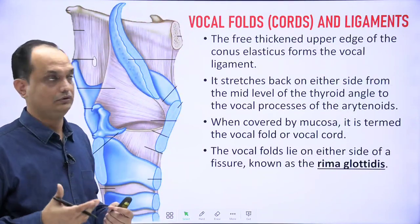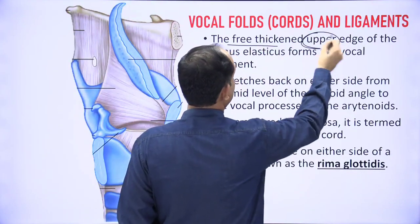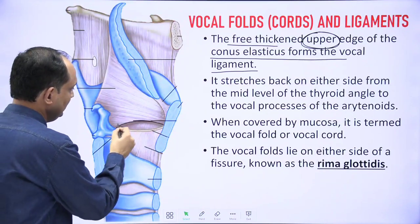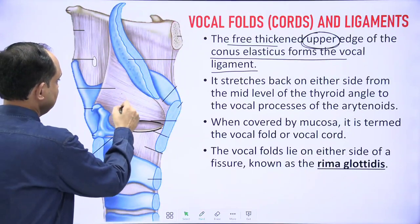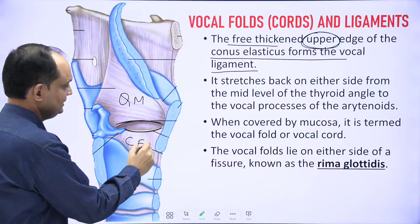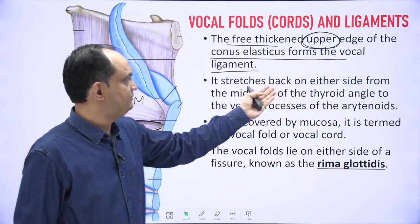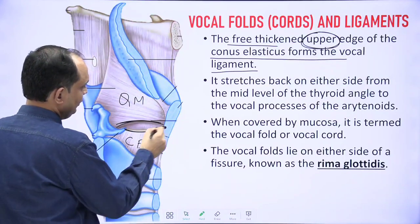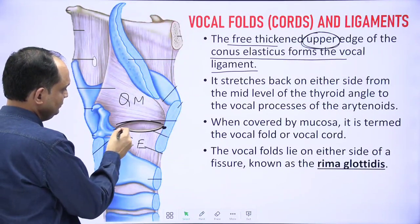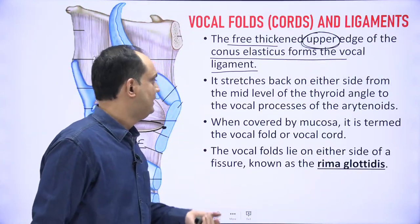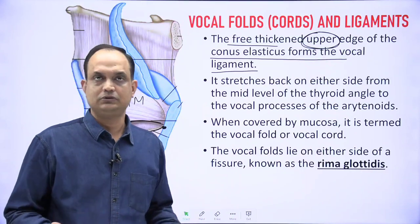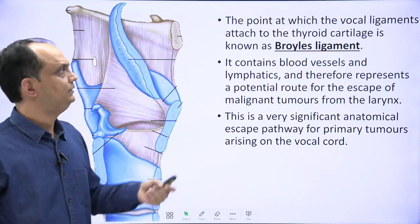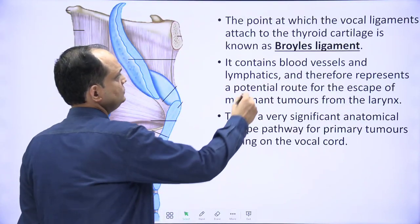The free thick upper edge of the conus elasticus forms the vocal ligament. The vestibular folds are the lower edge of the quadrangular membrane, while the vocal ligament is the upper edge of the conus elasticus. The vocal cords stretch on either side from the mid-level of the thyroid angle to the vocal process of the arytenoid cartilage. When the vocal cords are covered by mucosa they are known as vocal cords, and the area between them is the rima glottidis. The point where the vocal ligament attaches to the thyroid cartilage is known as Broyle's ligament.